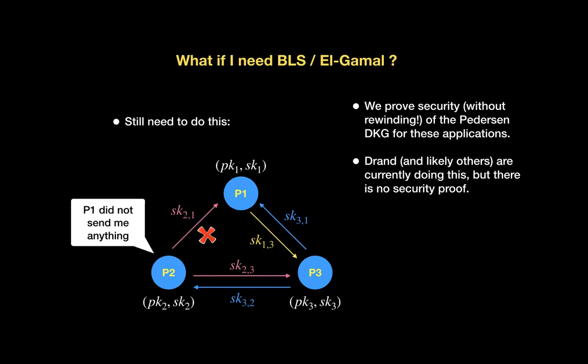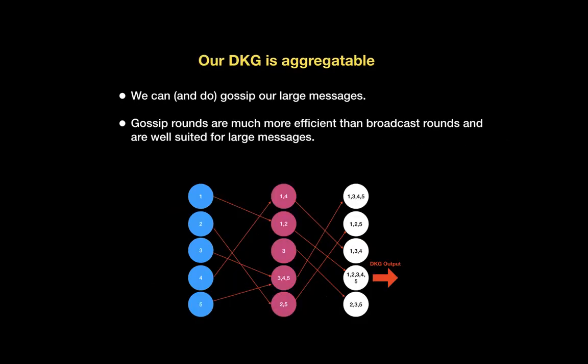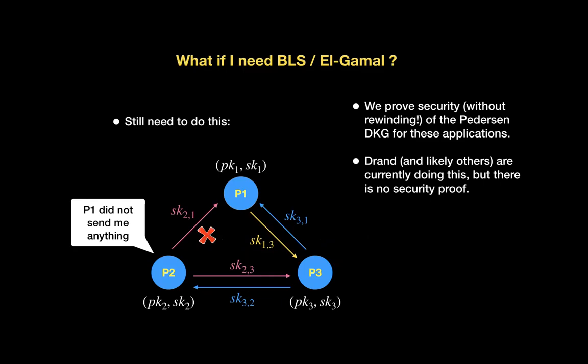If you're in a situation where you can't use our aggregatable structure and gossip communication, our techniques for proving our DKG is secure are also applicable to the Pedersen DKG for certain applications — specifically, it will work for BLS and for ElGamal, as we prove in the paper. The proof for BLS was a gap in the literature despite the fact that people are actually using the scheme in practice, so we thought it was important to provide. You will still need to do a complaints round, but at least the scheme itself will be secure.